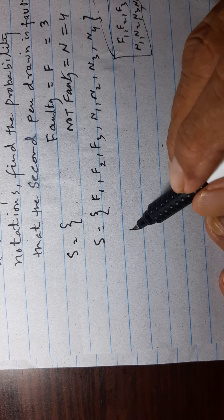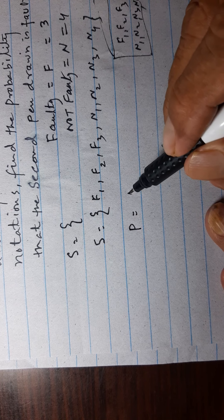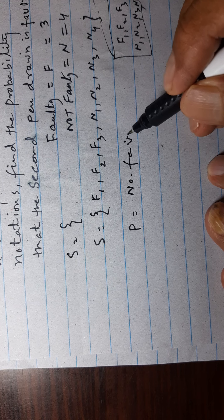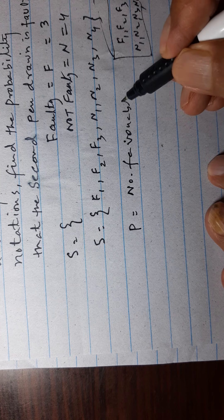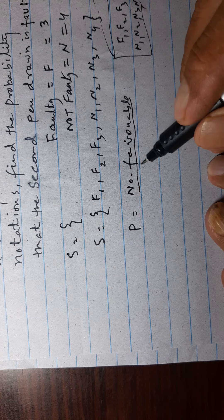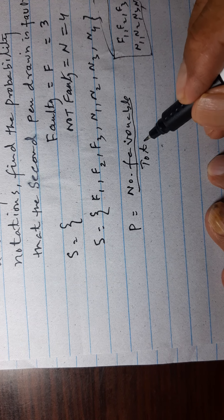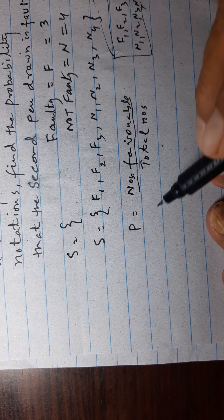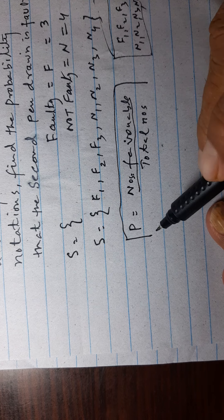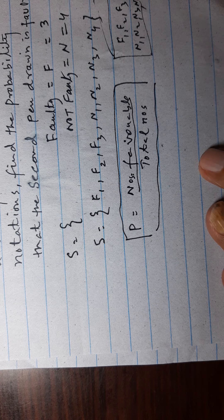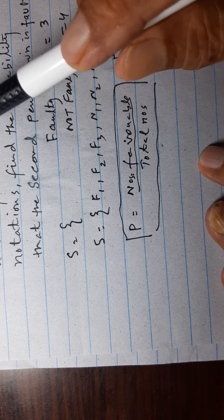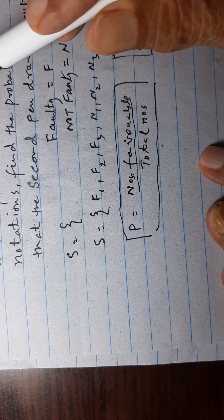Probability is number of favorable outcomes divided by total numbers. This is the probability formula. Now if we draw the first pen.